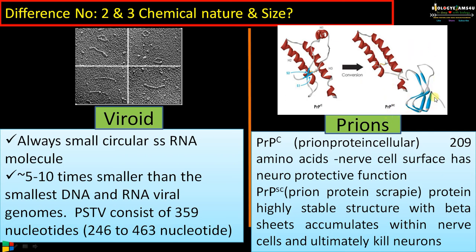PrPSC is very stable with beta sheets, and it accumulates in nerve cells as amyloids, ultimately killing neurons. So PrPC is the normal counterpart present in the cell with neuroprotective function, which is converted to PrPSC — a misfolded protein with many beta sheets — making it capable of forming amyloids or aggregations that ultimately kill neurons.